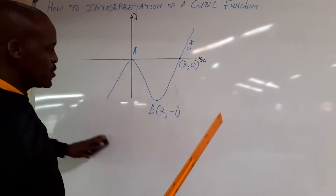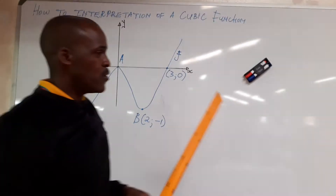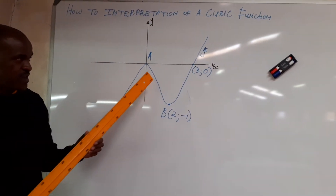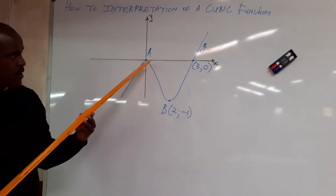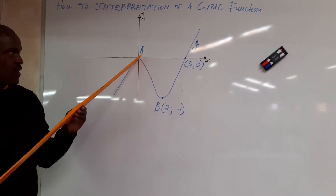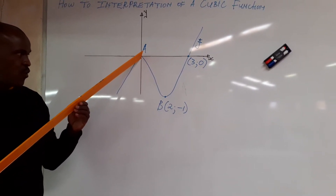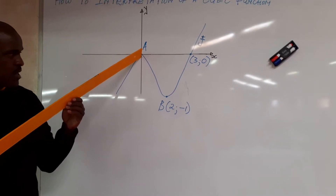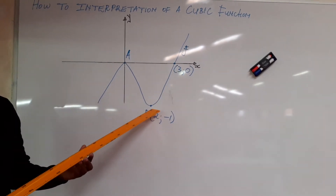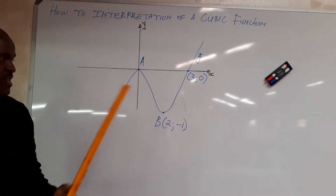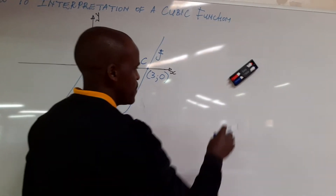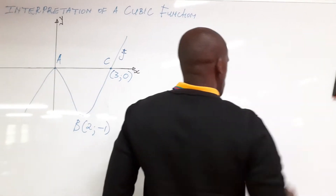All right, let's continue. We are now going to look at how to interpret the cubic function. We've got the graph of f here with these points. This is the turning point — at the same time, it's the y-intercept. Also, it's the x-intercept. We've also got that point, which is the x-intercept, and then again here at point B, we've got a stationary point. Let us just name this point as point C.